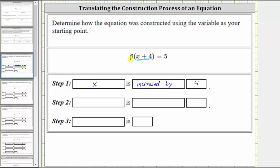But then notice we have 6 times the quantity x + 4, which means the sum of x and 4 is now multiplied by 6 for step two. So we say for step two, the sum from step one is multiplied by 6.